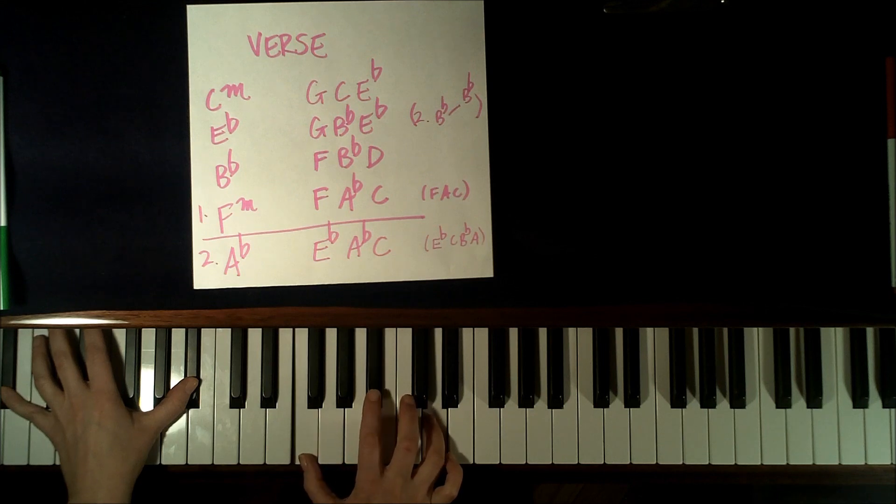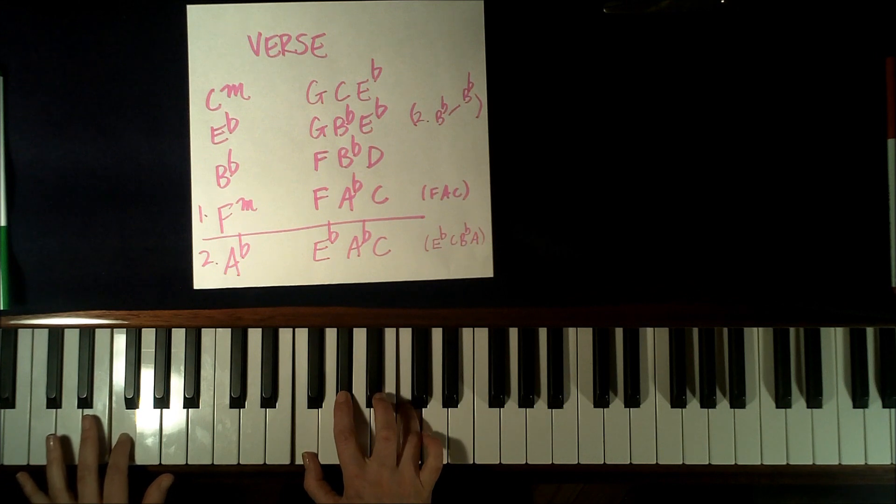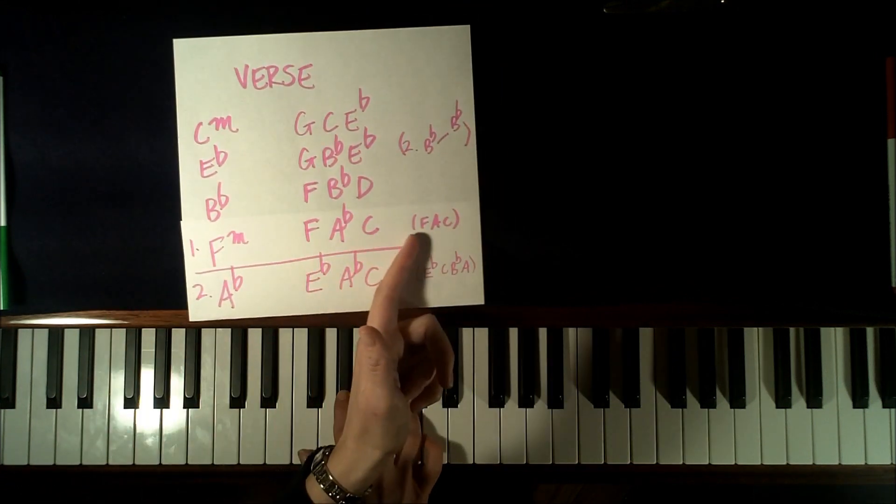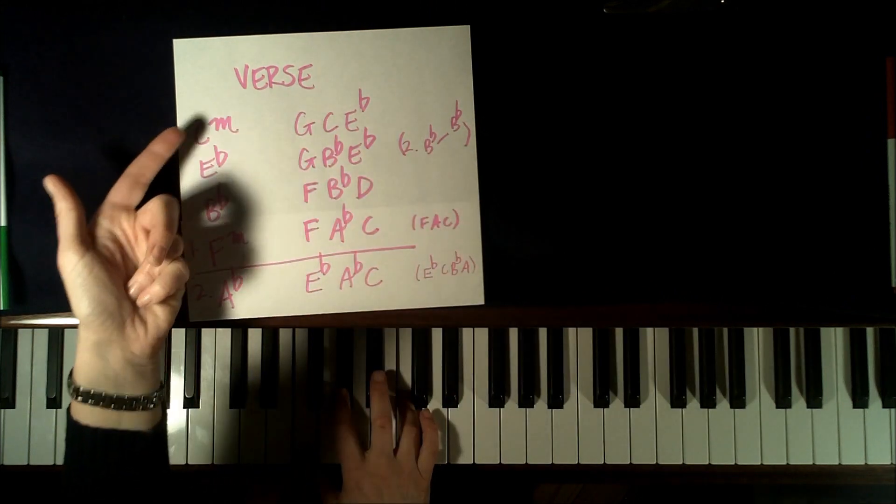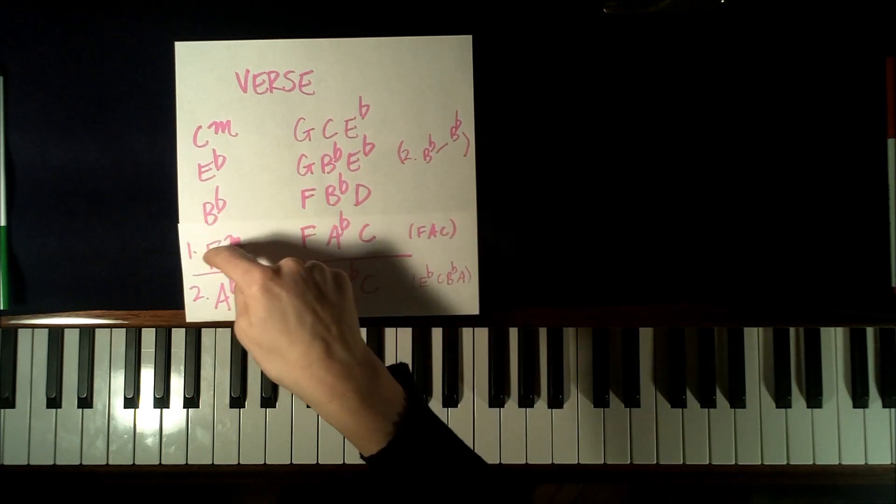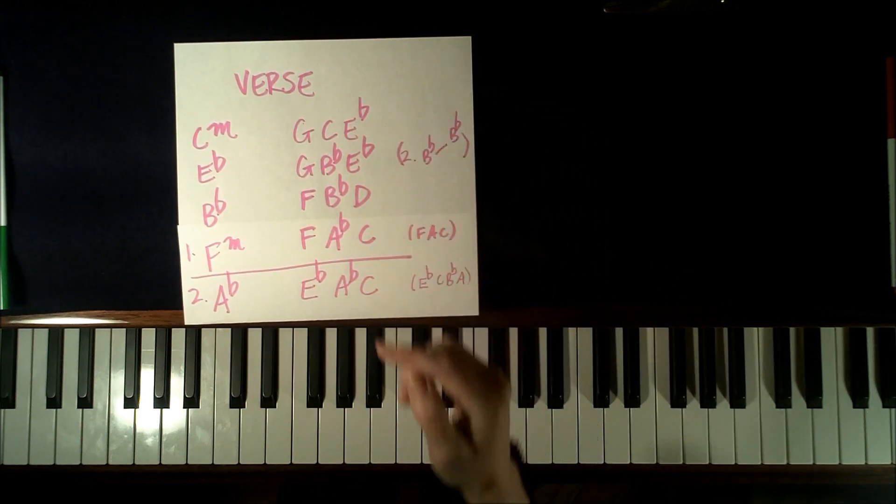So again, that's F, Bb, and D. Now I'll go to F minor. And then when you're listening to the piece, you'll hear this to take us back around. So the second time through, we don't play the F, we skip to the Ab, but something else happens in here, which is a bit interesting. So I'll show you that.